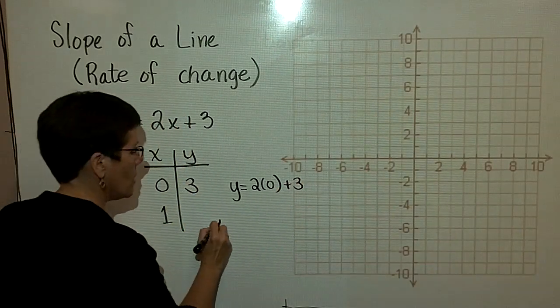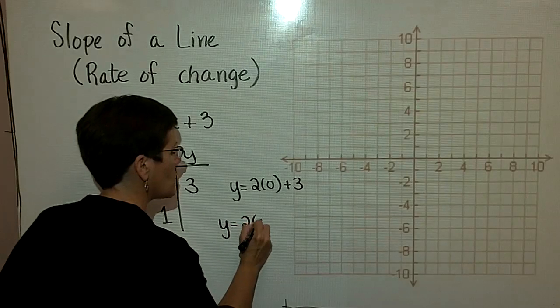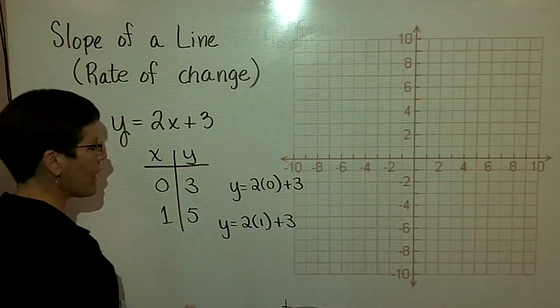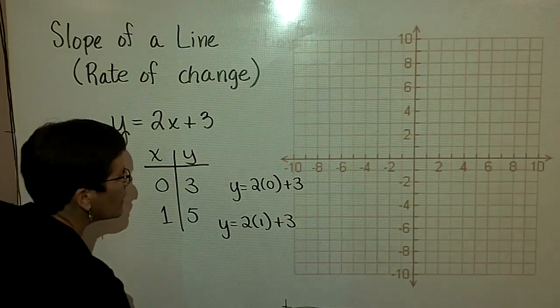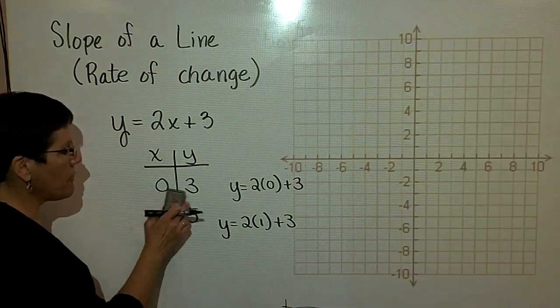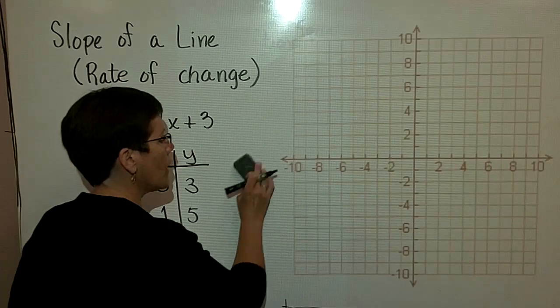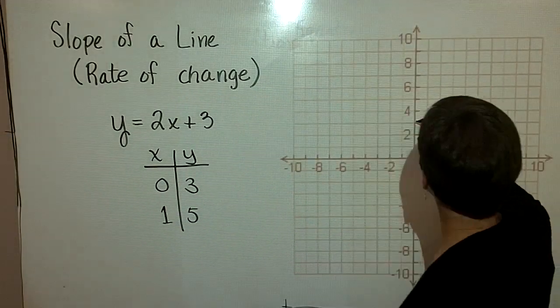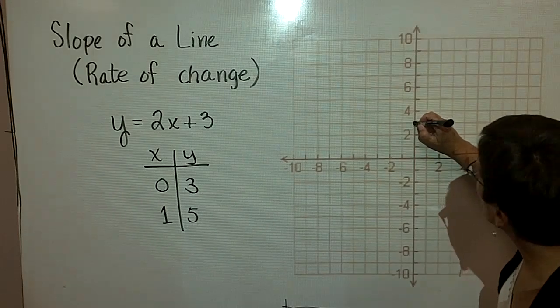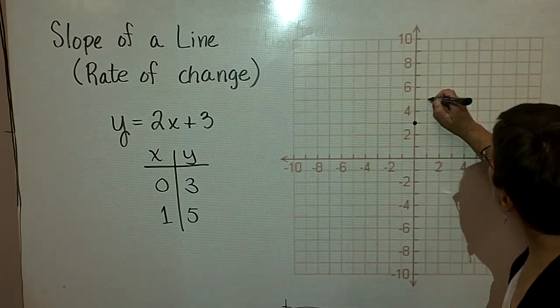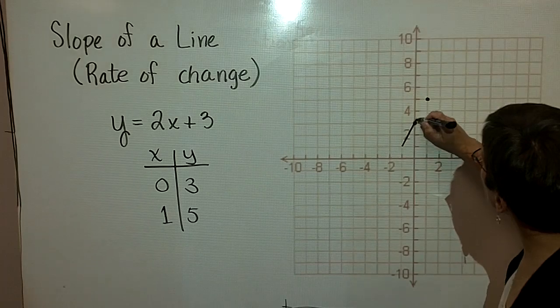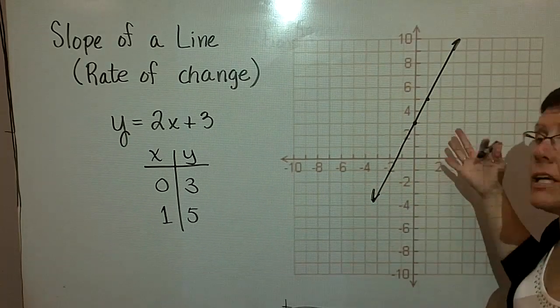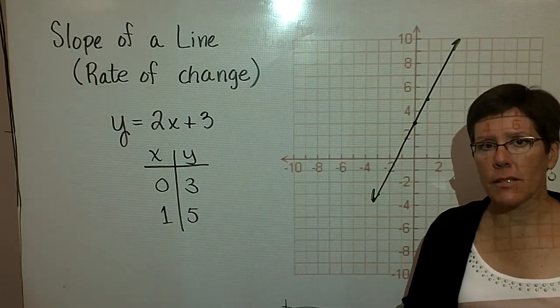And then in the second statement, y would be equal to 2 times 1, which is 2. And 2 plus 3 is 5. So from my earlier material, I found two ordered pairs that work in this equation. Let's go ahead and graph them. Here's the first one. When x is 0, y is 3. And when x is 1, y is 5. And let's draw the straight line through those two ordered pairs and recognize the graph for this line.